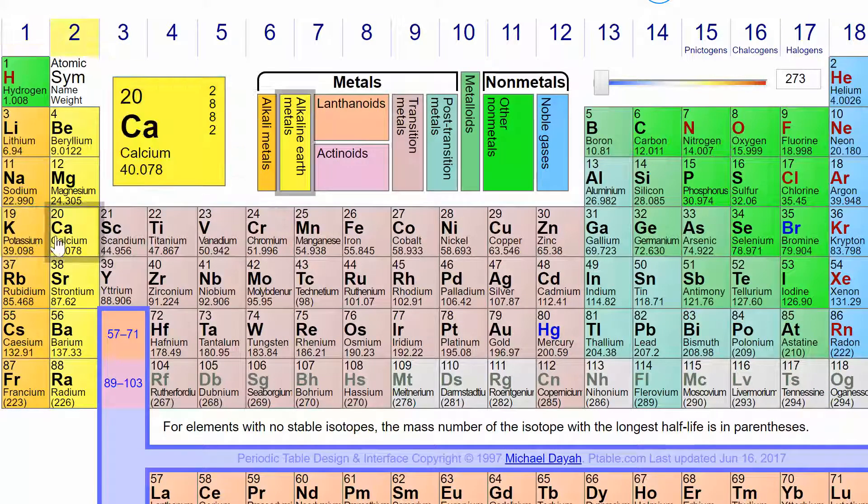So I have the 4s2 and then, I'm sorry, 4s2 and then 1, 2, 3, 4, 5, 6, 4d6. So I know I have iron. Then we can look at how many unpaired electrons we have.